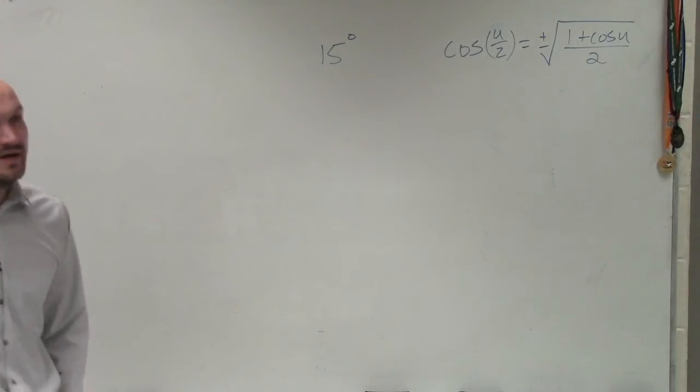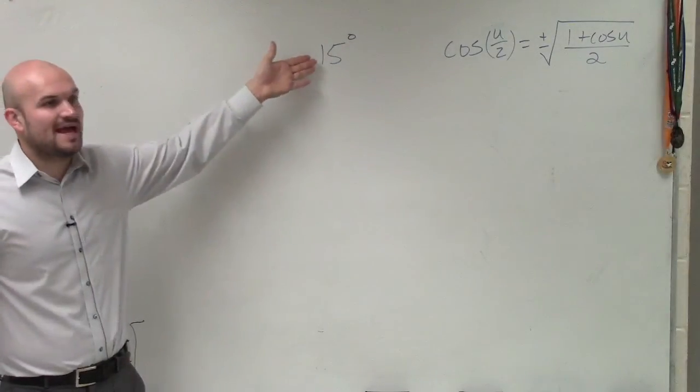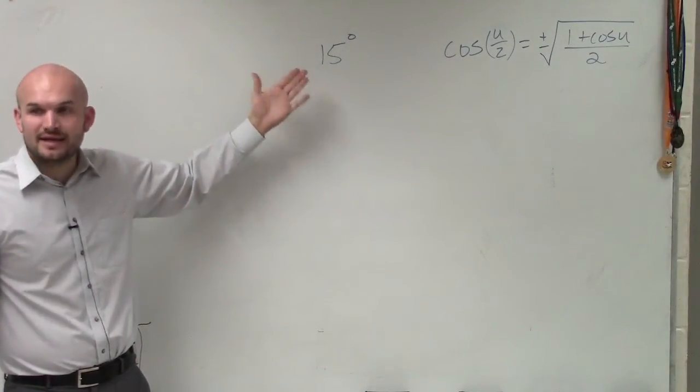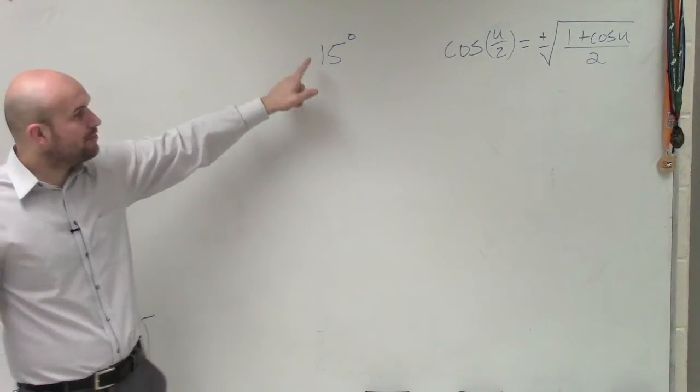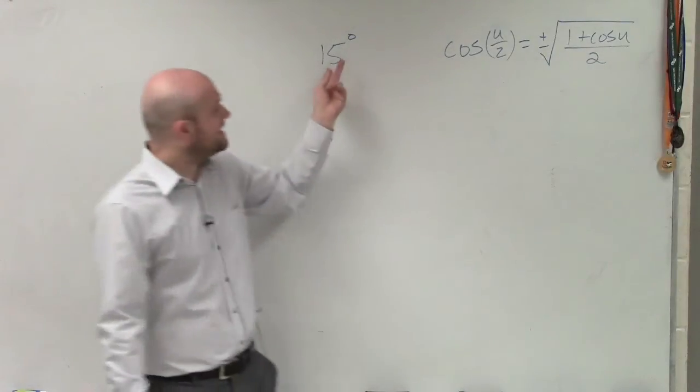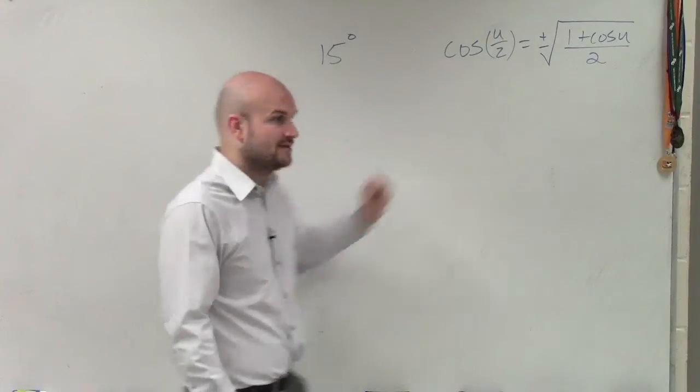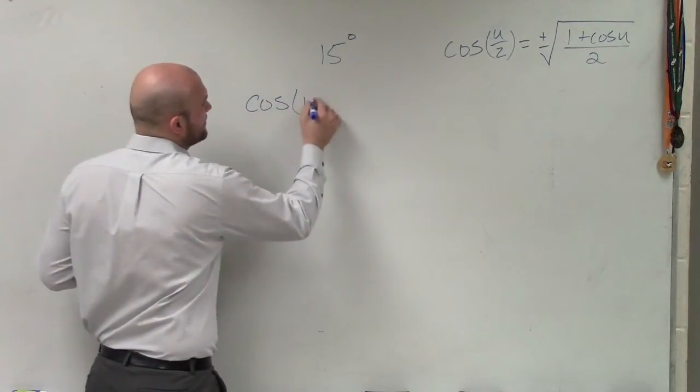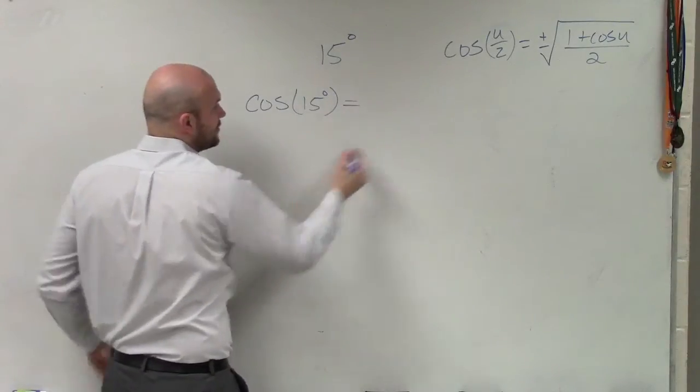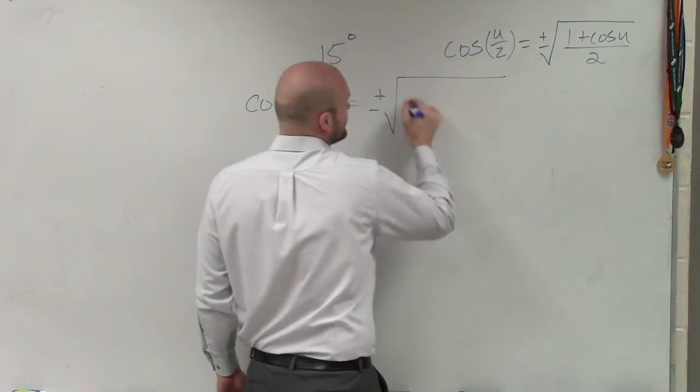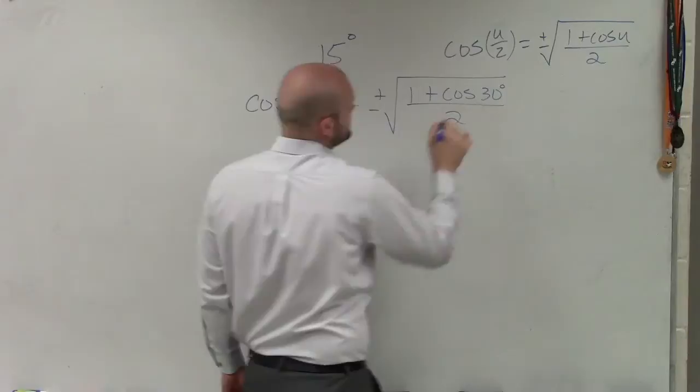So if I want to evaluate for 15 degrees, please note this is my angle that has already been cut in half. I can't evaluate sine, cosine, and tangent for 15 degrees. So don't plug 15 degrees in for your u. This is u divided by 2. So therefore, if I say cosine of 15 degrees, which is u divided by 2, is equal to plus or minus the square root of 1 plus cosine of 30 degrees divided by 2.